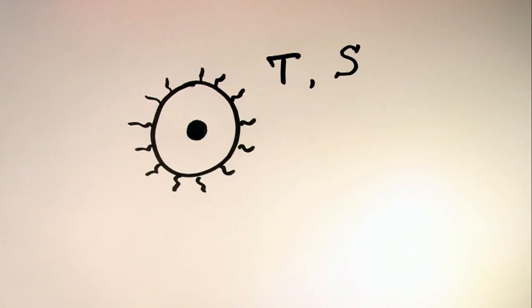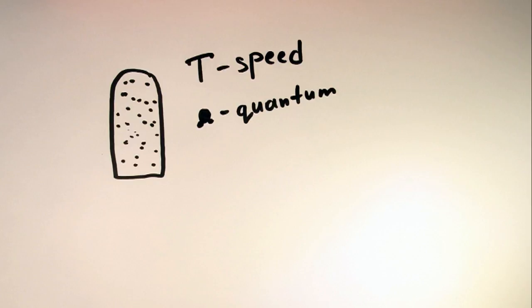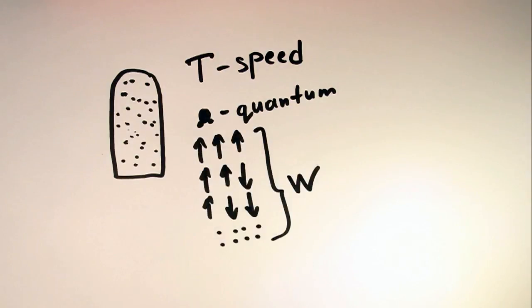To understand entropy, let's take a look at this vessel with some gas. Temperature is the indicator of the mean speed of the molecules. On the other hand, every molecule of the gas, as a quantum particle, possesses a set of all possible quantum microstates. We can calculate the number of possible microstates of all these molecules, take a logarithm of it, and that would be entropy.